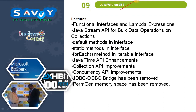Java 8 features include Functional Interfaces and Lambda Expressions, Java Stream API for Bulk Data Operations on Collections, Default Methods in Interface, Static Methods in Interface, For Each Method in Iterable Interface, Java Time API Enhancements, Collection API Improvements, and Concurrency API Improvements. Also, the JDBC-ODBC Bridge has been removed and PermGen memory space has been removed.